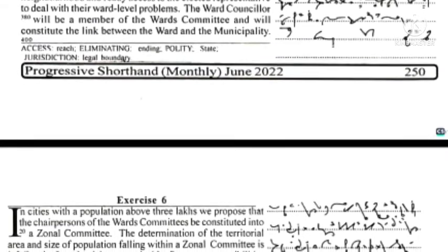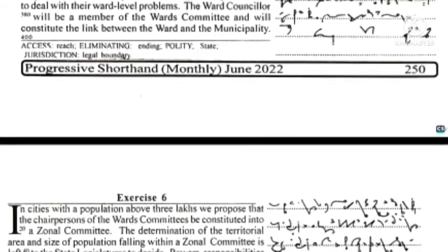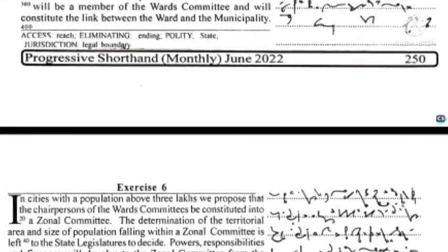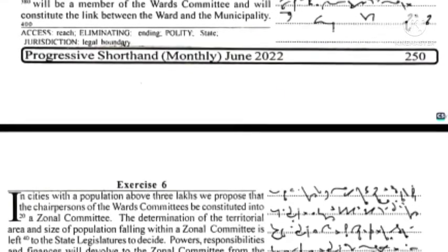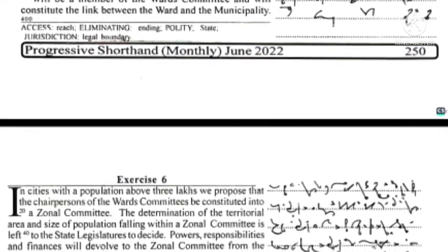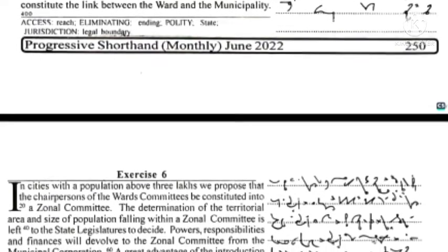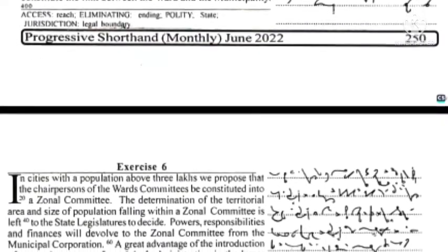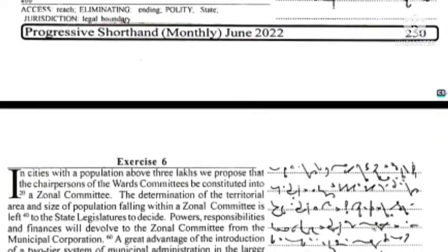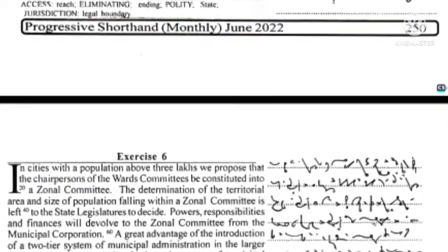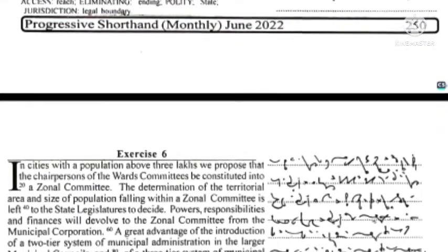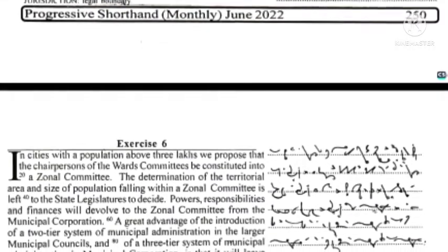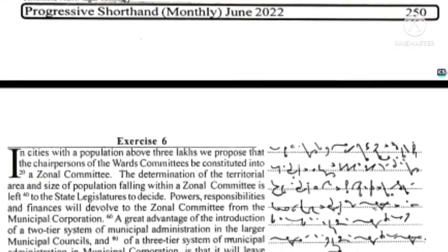In cities with a population above 3 lakhs, we propose that the chairpersons of the ward committees be constituted into a zonal committee. The determination of the territorial area and size of population falling within a zonal committee is left to the state legislatures to decide. Powers, responsibilities, and finances will devolve to the zonal committee from the municipal corporation.